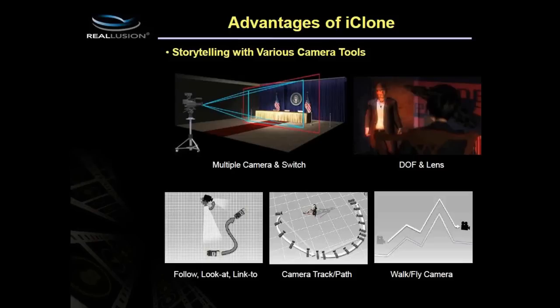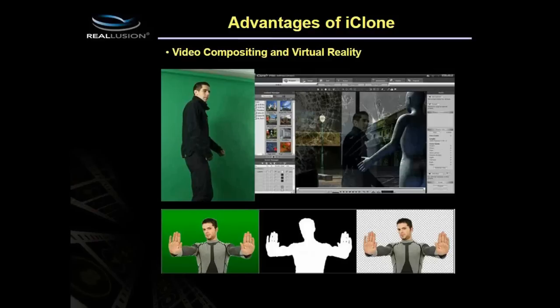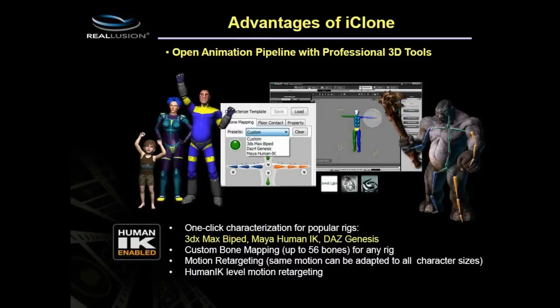There's video compositing with virtual reality — using Pop Video compositing software you can composite green screen footage directly into iClone with automatic green screen removal. There's also an open animation pipeline with professional 3D tools: if you use Max, Maya, Daz, or Blender, you can bring characters and animations into iClone with 3D Exchange in a two-click process, with automatic motion retargeting to your imported character rigs.